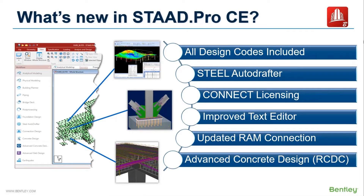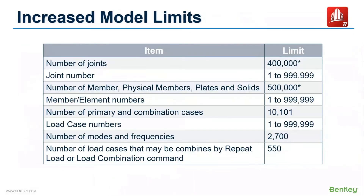These are some of the important feature updates in Connect Edition. Apart from the feature updates, model limits have also been increased. This information might be useful if you work with a large project with thousands of beams, plates, and load cases. For example, the number of joints has been increased to 4 lakhs and load case numbers to 10 lakhs and so on. STAT's analysis engine is now more powerful to handle this type of large model, and that's why the upper limit has been drastically increased.